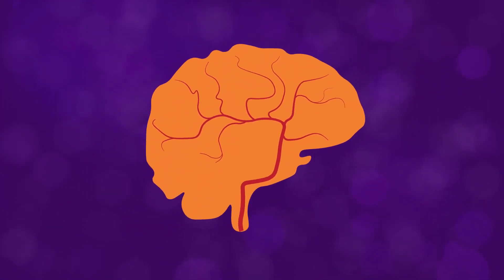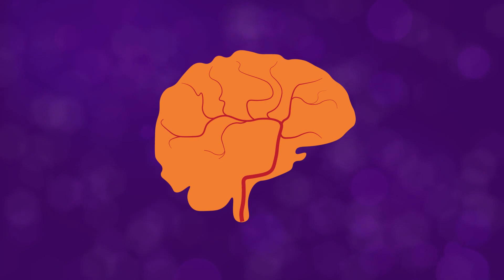The blood-brain barrier is a network of tiny blood vessels that deliver oxygen, nutrients, and other essential molecules to our brain. But the blood vessels that make up the blood-brain barrier are different from those found in the rest of our body.